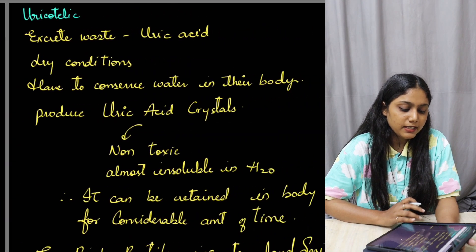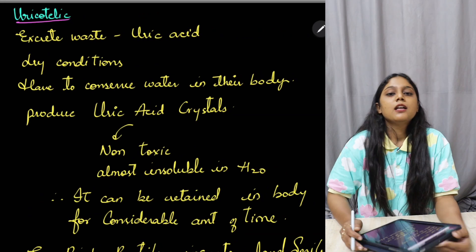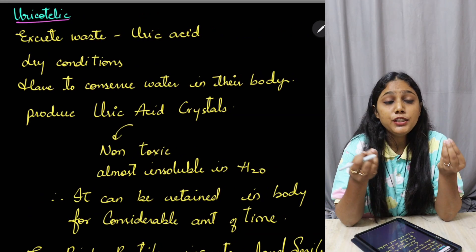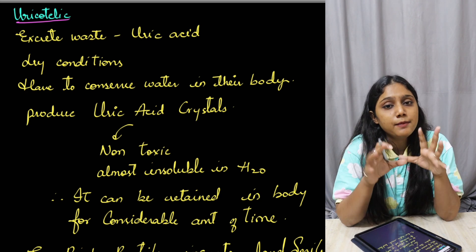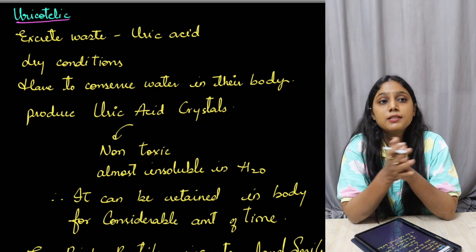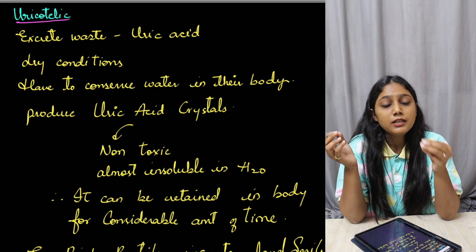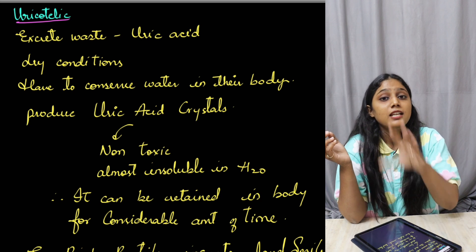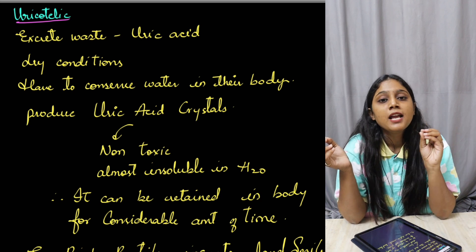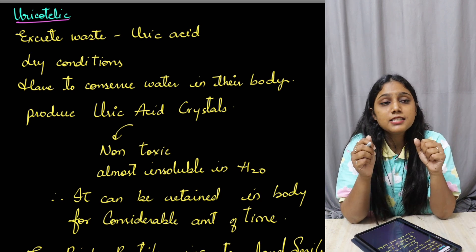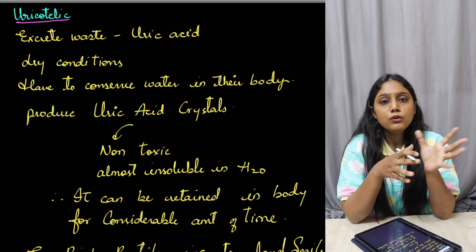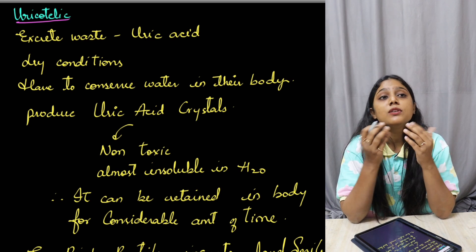After ureotelic animals, we have uricotelic animals. Just like ammonotelic and ureotelic animals, if an animal excretes uric acid as its primary nitrogenous waste, those animals are called uricotelic animals. Uric acid is the least toxic when compared to ammonia and urea, and it requires very little water for excretion.